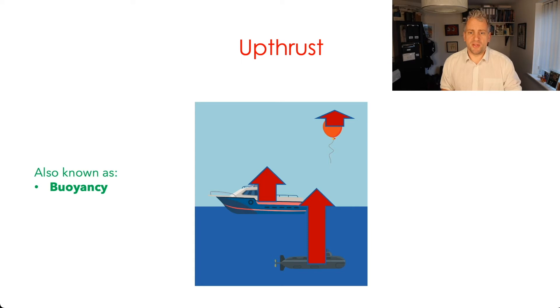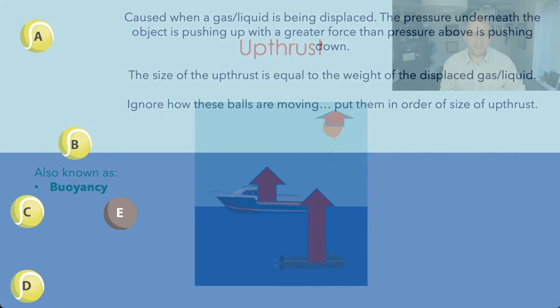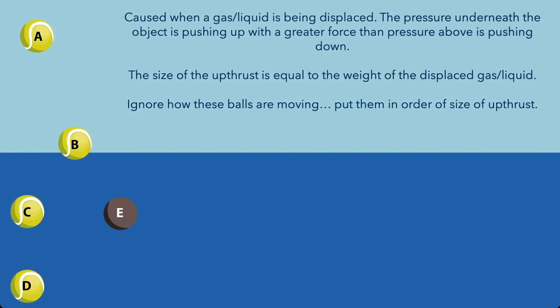It's also known as buoyancy and it's caused because there is a pressure difference acting upwards from underneath and from above pushing down. So I've got a challenge for you. I've told you that the up thrust is caused when you displace a fluid. The actual size of that up thrust is equal to the weight of the fluid that you have displaced.